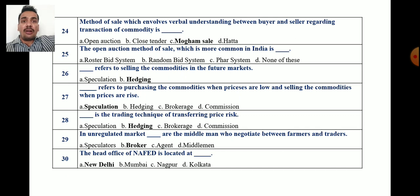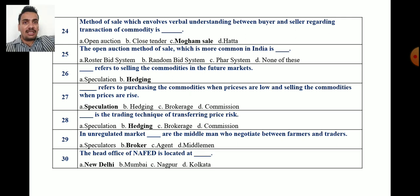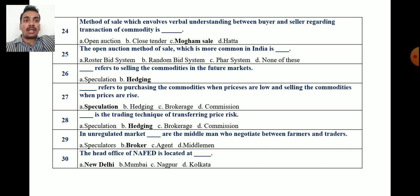Question 24: The method of sale which involves verbal understanding between buyer and seller regarding the transaction of a commodity — options are open, close, mogam sale, or hatta sale. The correct answer is mogam sale, which involves verbal understanding between buyers and sellers.